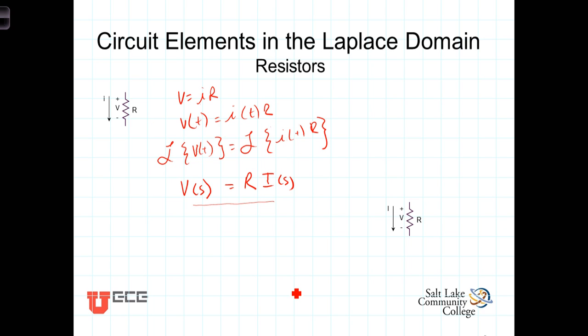In the Laplace domain, if we have a resistor of value R with a voltage across it V of S and a current I of S flowing through it, then V of S is equal to R times I of S.